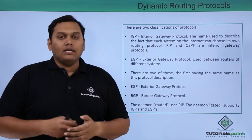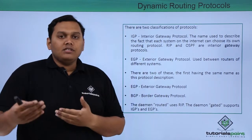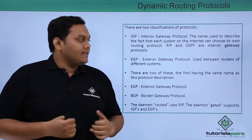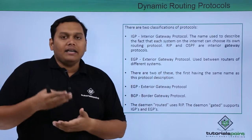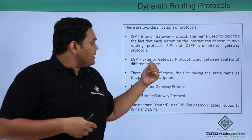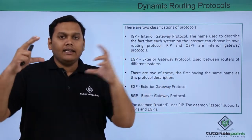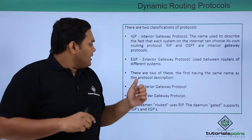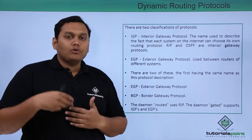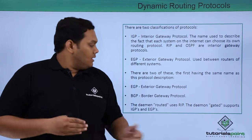Coming to the interior gateway protocol, each system on the internet chooses its protocol automatically. That means the routing protocol is chosen automatically — RIP and OSPF are interior gateway protocols. Coming to exterior gateway protocol, it is used between routers of two different systems — that is, between an external system and an internal system. There are two types of exterior gateway protocols: exterior gateway protocol and border gateway protocol.